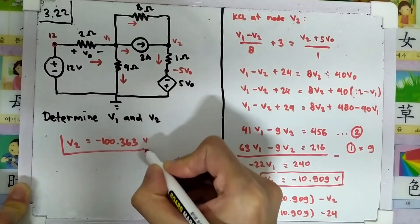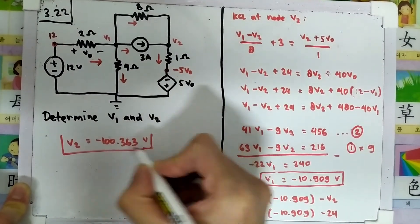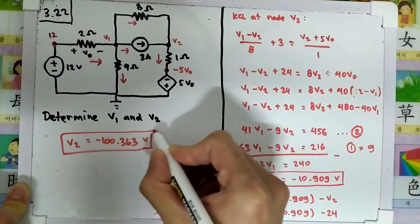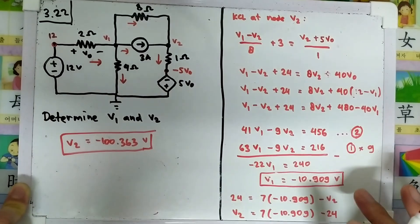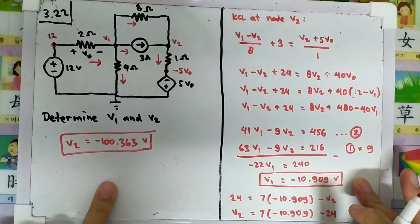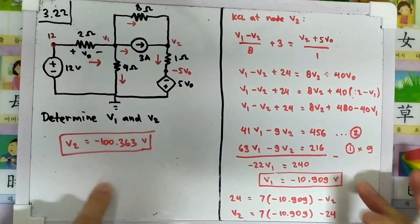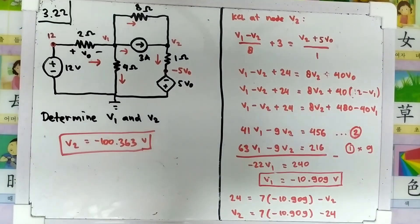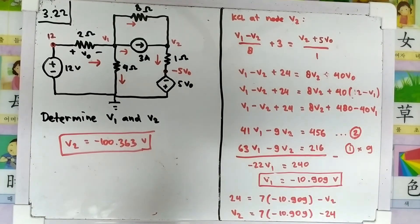So our final answers are: v1 equals minus 10.909 volts, and v2 equals minus 100.363 volts. Let me know if I made any mistakes.